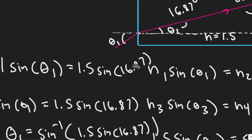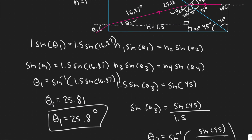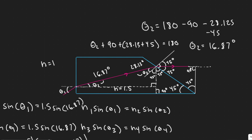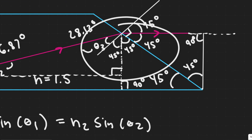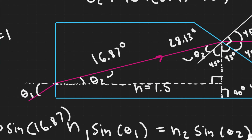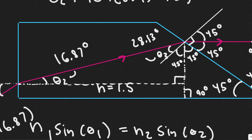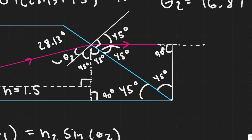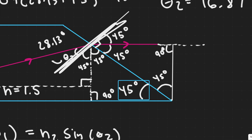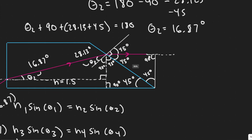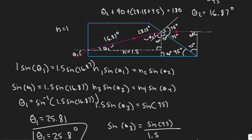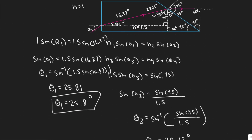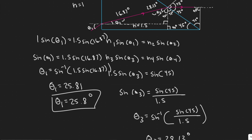So the angle of incidence of the beam at the left face is 25.8 degrees. Just a quick overview: the main trick to this problem is recognizing the angle geometry — that this forms a triangle, that this angle is 90 degrees, that these angles are 45 degrees — and then applying Snell's law twice in different cases to get your final answer. So 25.8 degrees is your answer.